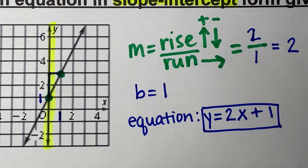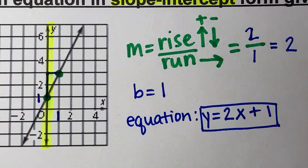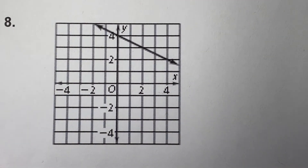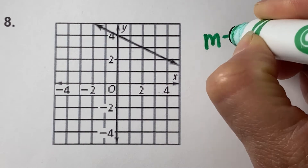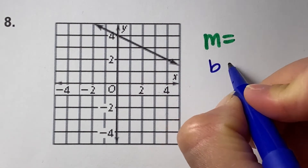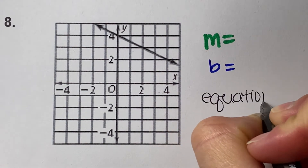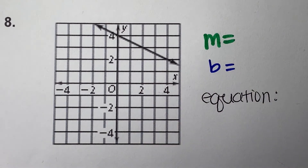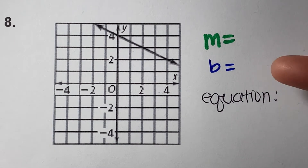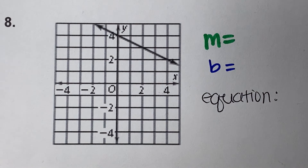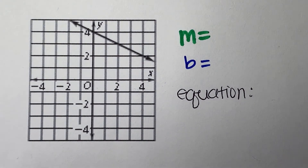If you need more time, go ahead and pause. I'm going to move on to a second example — here's example number 8. Again, to write the equation, we need to find m, our slope, and b, the y-intercept, and then we can write our equation in y equals mx plus b form. You don't have to go in the same order; if you'd like to find b first by looking at the y-intercept, you can do that, and then go back and find rise over run — whatever is easier for you.